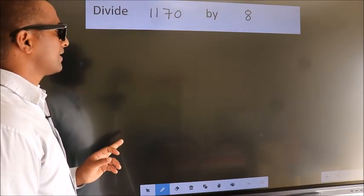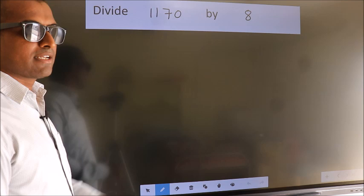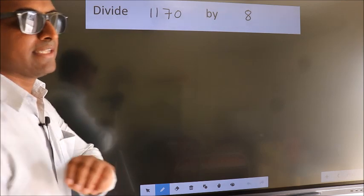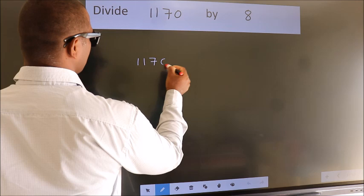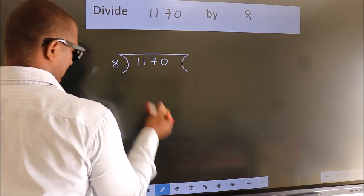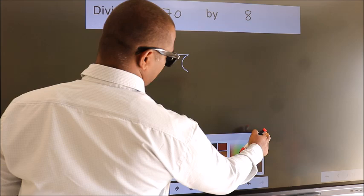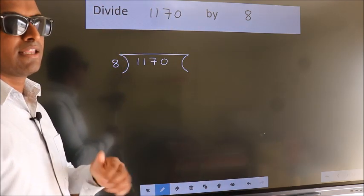Divide 1170 by 8. To do this division, we should frame it in this way. 1170 here, 8 here. This is your step 1. Next.